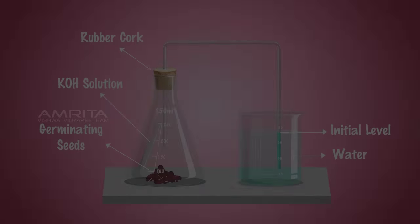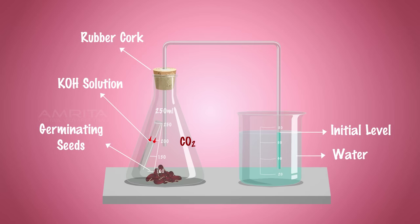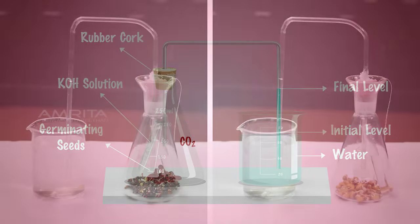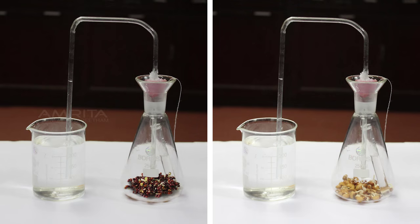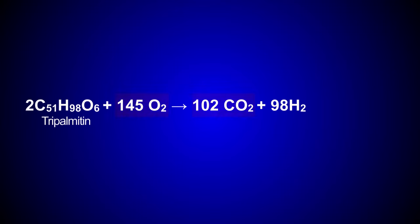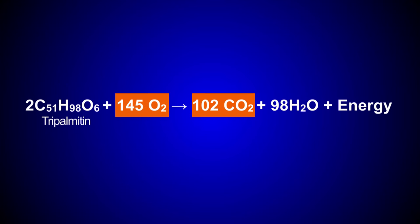Conclusion: The rise in water level at the end of the delivery tube dipped in the beaker proves that germinating seeds release carbon dioxide during respiration. In the case of mustard and bean seeds, the rise in water level is relatively lesser because these seeds use fat and proteins as respiratory substrate and release a very small amount of carbon dioxide.